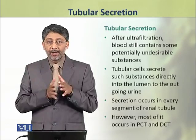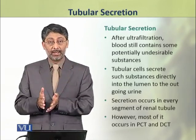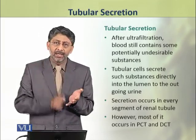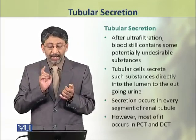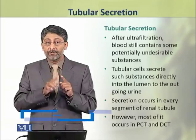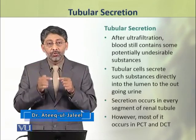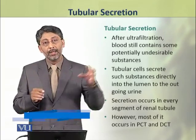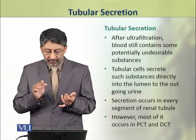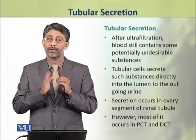After ultrafiltration, when many substances are filtered from the blood, the blood still contains some potentially undesirable substances. Tubular cells of the convoluted tubule secrete such substances directly into the lumen of the renal tubule into the outgoing urine. Secretion occurs in every segment of the renal tubule; however, most of it occurs in the proximal and distal convoluted tubules.